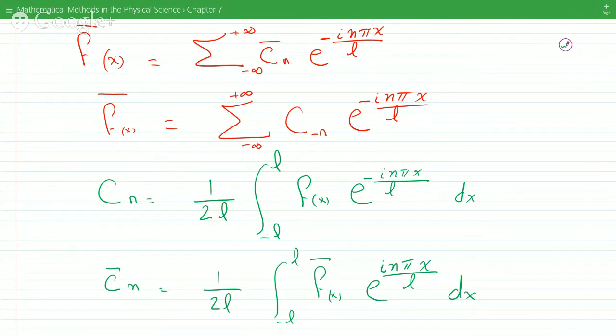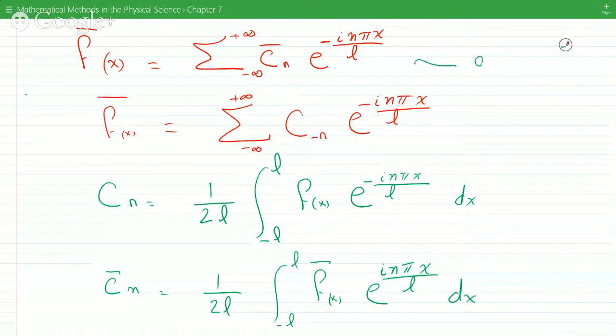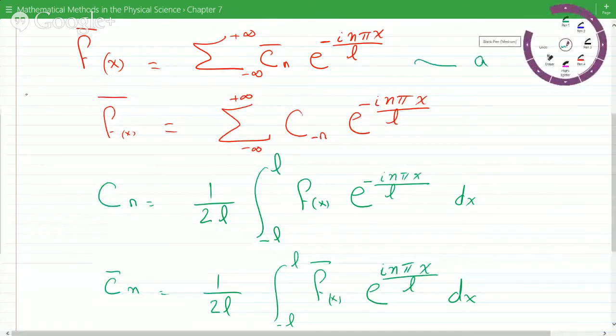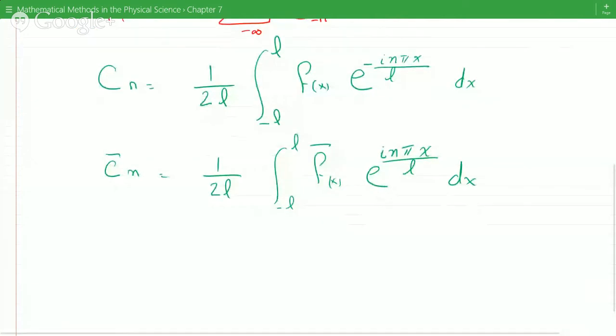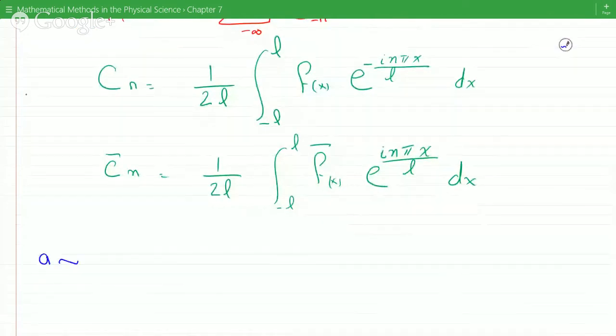And now if I multiply, so let's call this equation A. Let's see if this gets us somewhere. So if we multiply the first equation by F of x, we would multiply A by F of x.